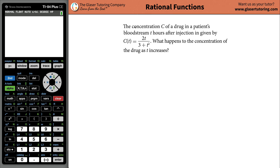The concentration of a drug in a patient's bloodstream, t hours after injection, is given by this function: concentration equals 2t divided by (3 plus t squared). The question is asking us what happens to the concentration of the drug as t increases.